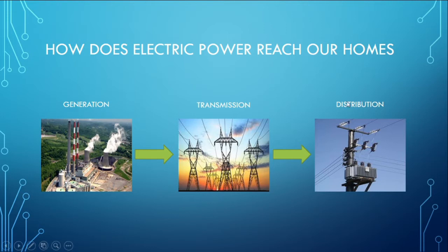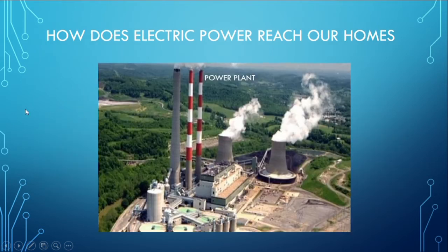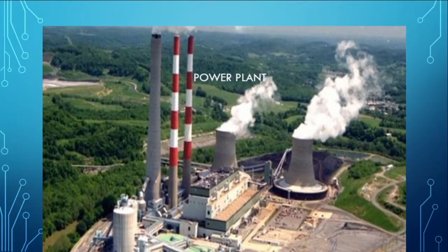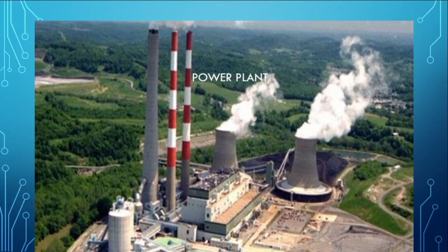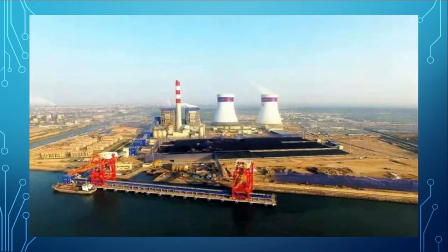First we look at the generation part. At the generation side we have a power plant. The power plant produces electrical power as the output irrespective of the type of input power. There are different types of power plant. In a thermal power plant, coal is used as the input power to generate electricity.